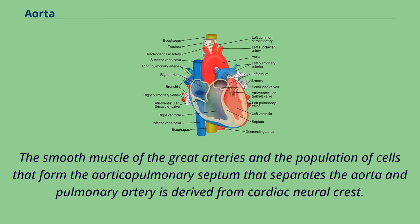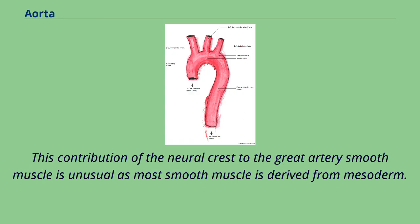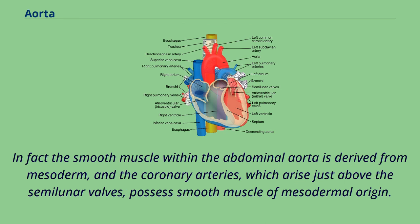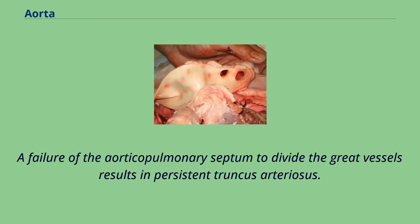This contribution of the neural crest to the great artery smooth muscle is unusual, as most smooth muscle is derived from mesoderm. In fact, the smooth muscle within the abdominal aorta is derived from mesoderm, and the coronary arteries, which arise just above the semilunar valves, possess smooth muscle of mesodermal origin. A failure of the aorticopulmonary septum to divide the great vessels results in persistent truncus arteriosus.